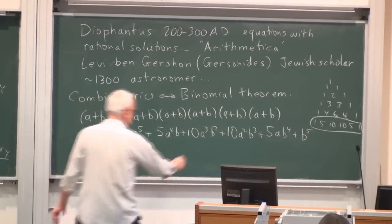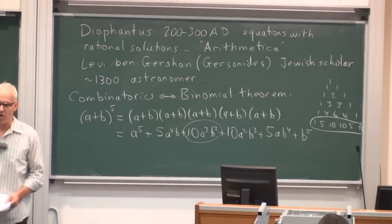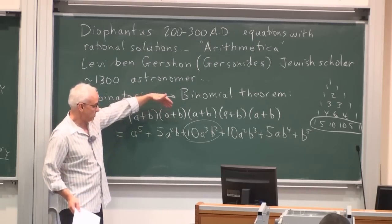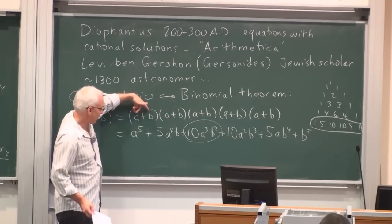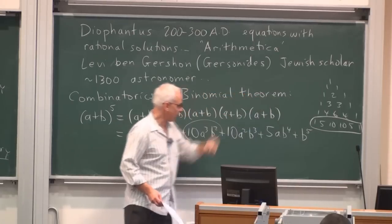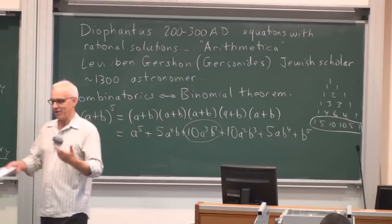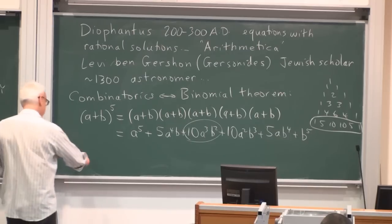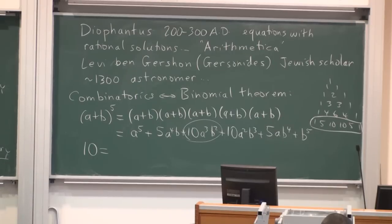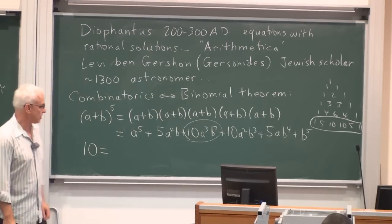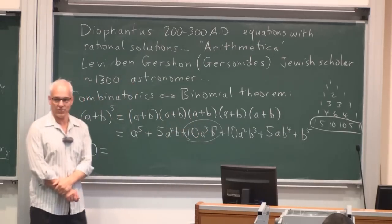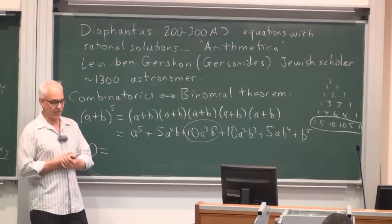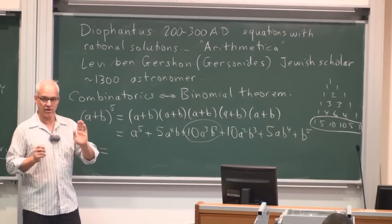So nowadays, all students know this is a to the fifth plus, and then there's some numbers, which we get from Pascal's triangle. So there's the relevant fifth row. So the coefficients are a to the fifth, and then 5a to the fourth b, plus 10a cubed b squared, plus 10a squared b cubed, plus 5ab to the fourth, plus b to the fifth. And Ben Gershon realized that there was some counting going on here, that if we look at one of these terms, for example, say this one here, where do we get the 10 from?